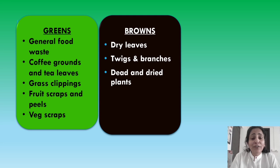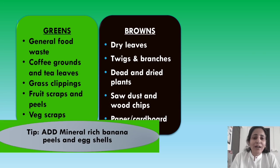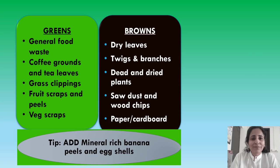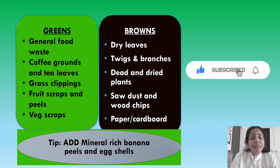The browns are the dry leaves, twigs and branches, dead and dried plants, sawdust and wood chips, and paper or cardboard. A tip from my end as a one-year-old composter: we can add mineral-rich banana peels and eggshells into our composting mix because they give a host of nutrients like potassium, phosphorus, magnesium, and calcium.